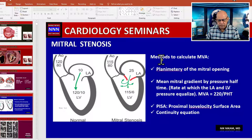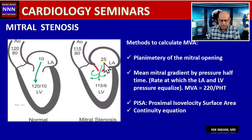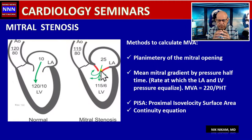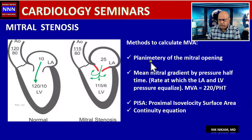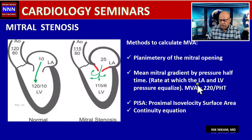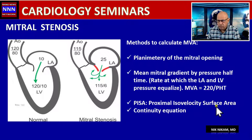There are several methods used to calculate the mitral valve area. The most important are: planimetry of the mitral valve orifice by mapping the opening; pressure half-time, which determines the rate at which left atrial and left ventricular pressures equalize; the PISA method (proximal isovelocity surface area); and the continuity equation, which is most commonly used for aortic stenosis.